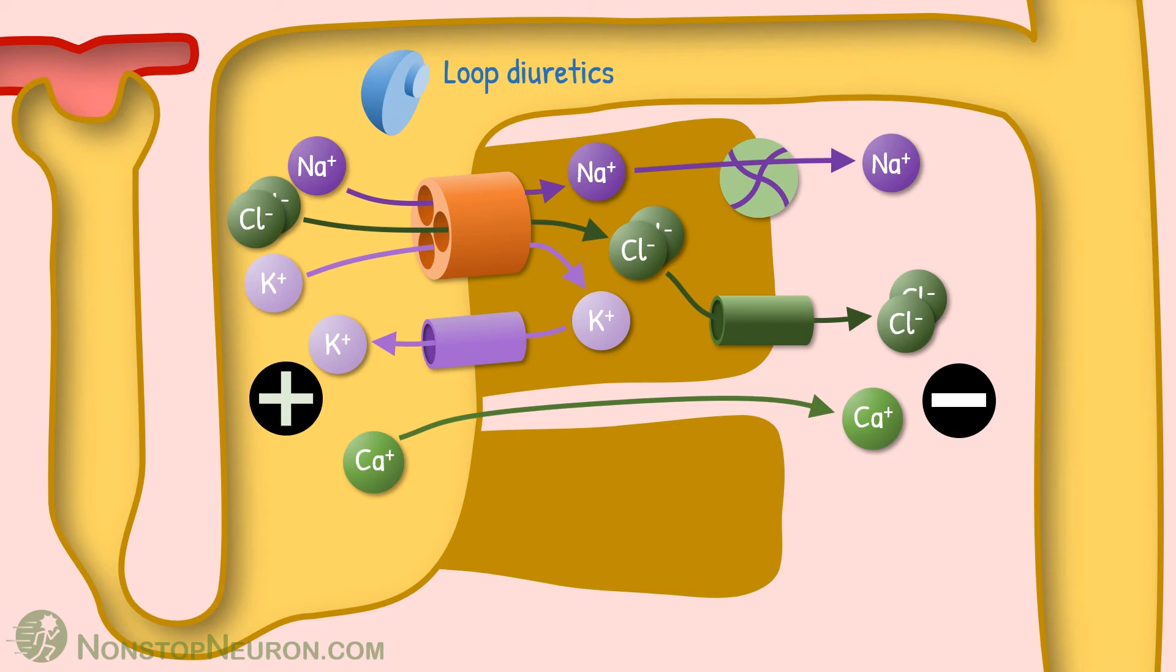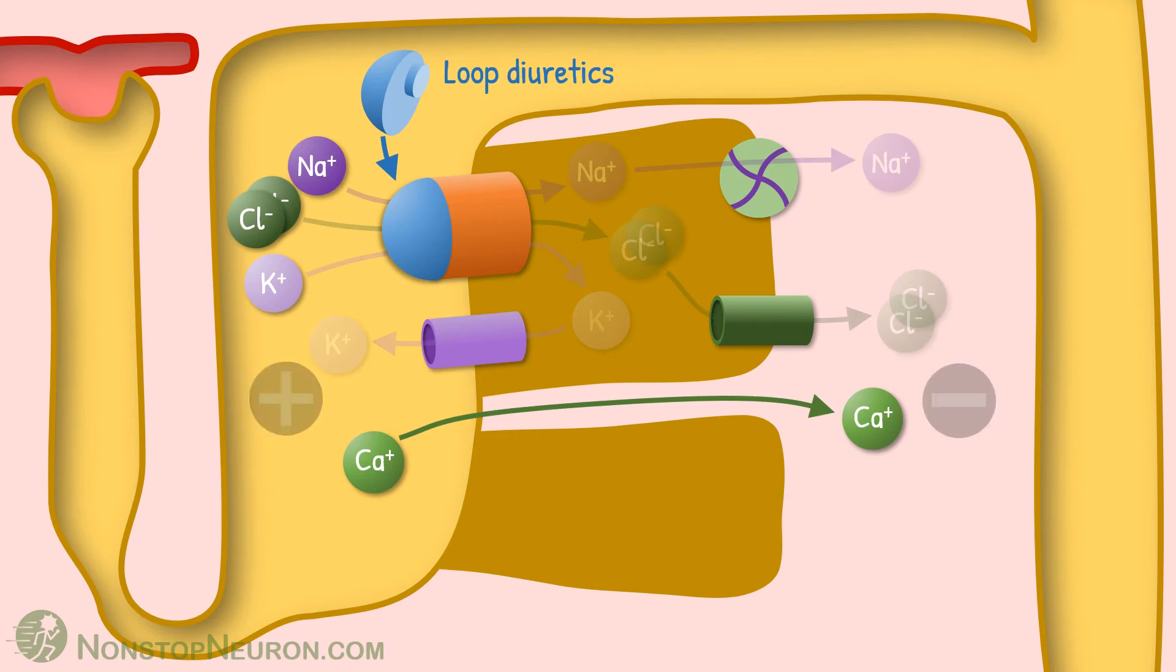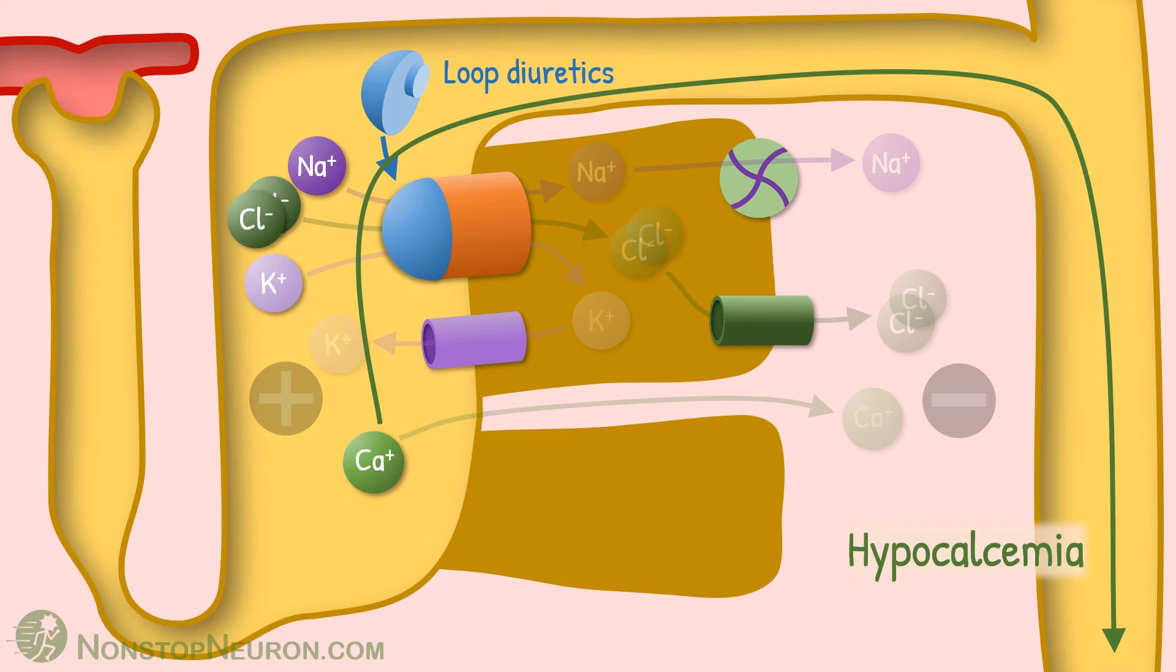Now, let's bring in loop diuretics. They inhibit sodium-potassium-2-chloride cotransporter. So all the subsequent activities are decreased and eventually this electrical gradient is also abolished. So calcium reabsorption decreases and more calcium is lost in urine, and this my friend causes hypocalcemia.